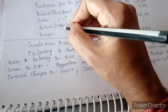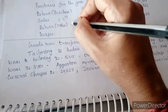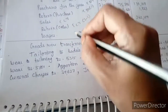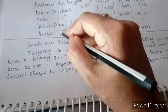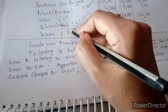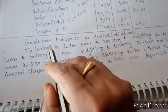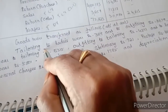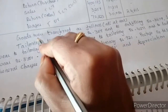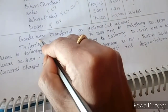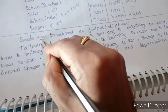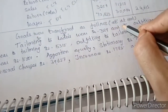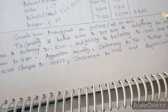Now let's understand the account layout. Purchase return goes on the trading account, credit side. Sales go on the credit side as well. Wages go on the trading account, debit side. Transfers are split between sales and purchase columns. Sales return reduces sales figures.